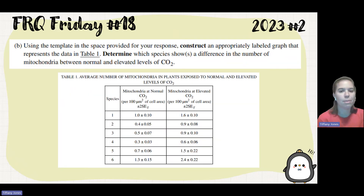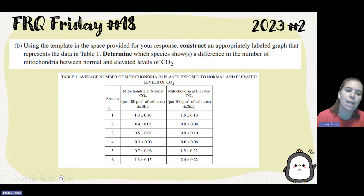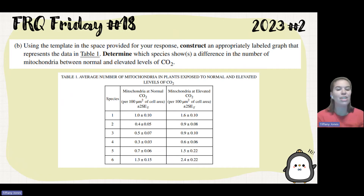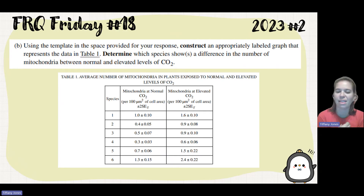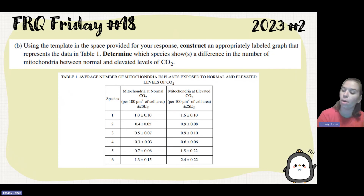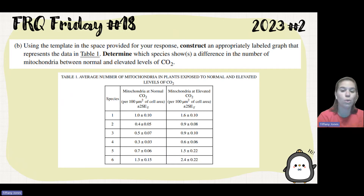Part B asks to construct a properly labeled graph representing the data in table one. Looking at the data, there are six different species — independent entities that don't affect one another — which means this calls for a bar graph. A modified bar graph is probably ideal because there are 12 different data points to plot plus their error bars, which could get a little clunky on a standard bar graph, but you can do either one.